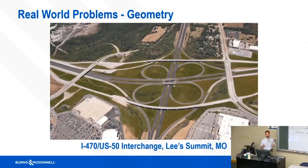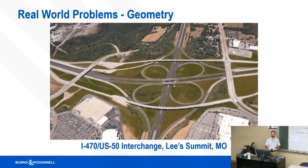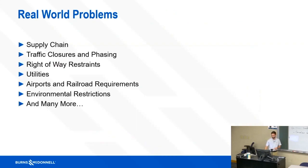Complex geometries are another real-world challenge — I-470 and US-50 in Lee's Summit, Missouri, has lots going on: curving bridges, vertical curvature, complex roadway geometry. A big thing coming out of school is that all our class problems are straightforward, with everything at 90 or 45 degrees. But in the real world you have all these different curves and complexities to consider, and a lot of time is spent dealing with those.